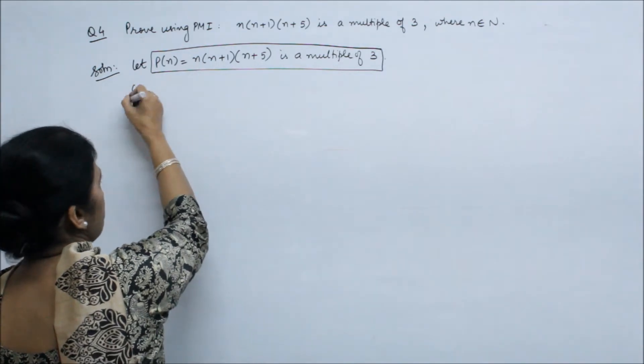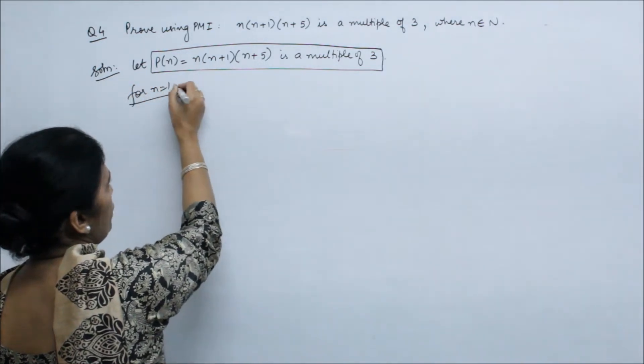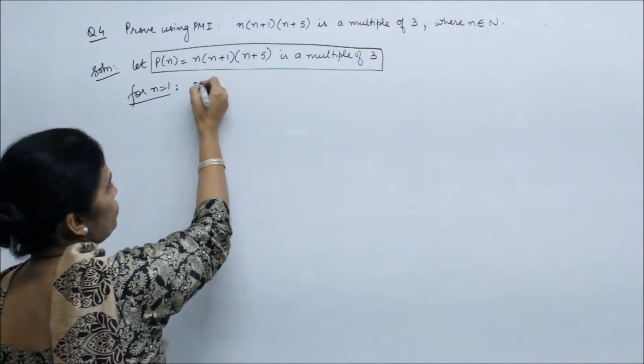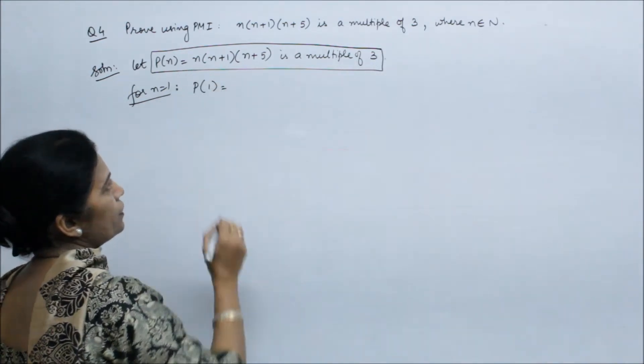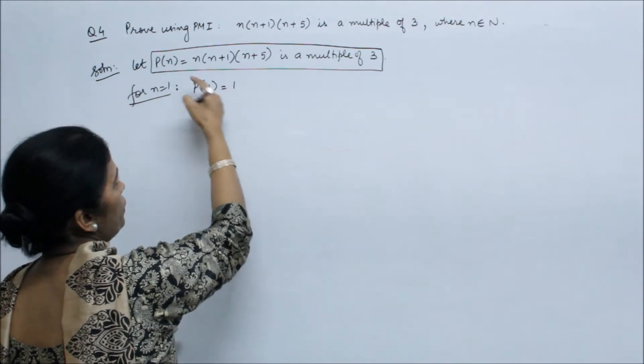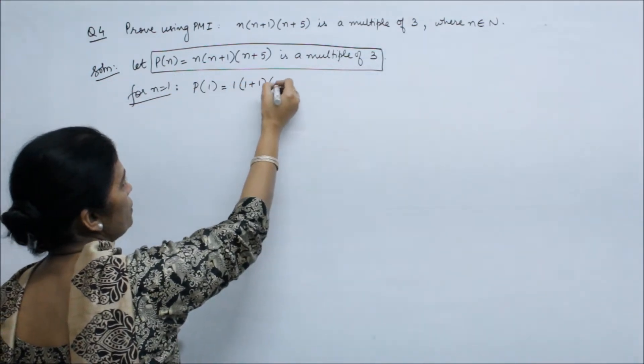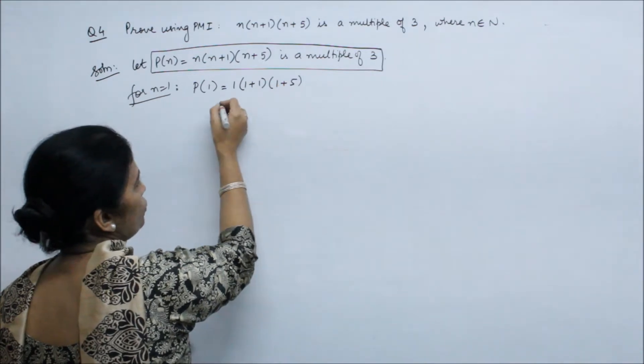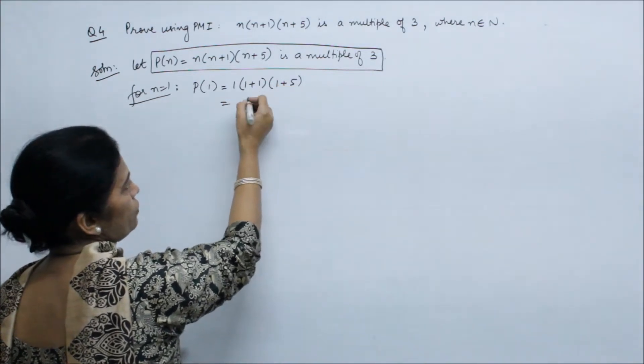Now we have to assume when n is equal to 1. The first step is n is equal to 1. The first step we have to do this condition. Here we put n equals 1.